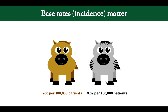Even if a rare disease has some discriminating features that match, the base probability of having a super rare disease is still very low. You have to take base rates into account and lower the probability accordingly. Rare diseases are zebras; common ones are horses.